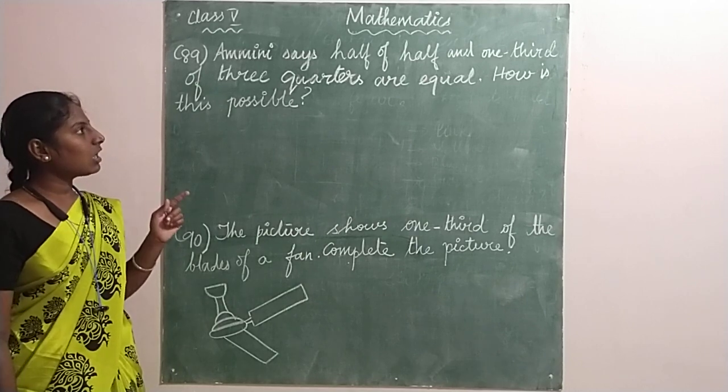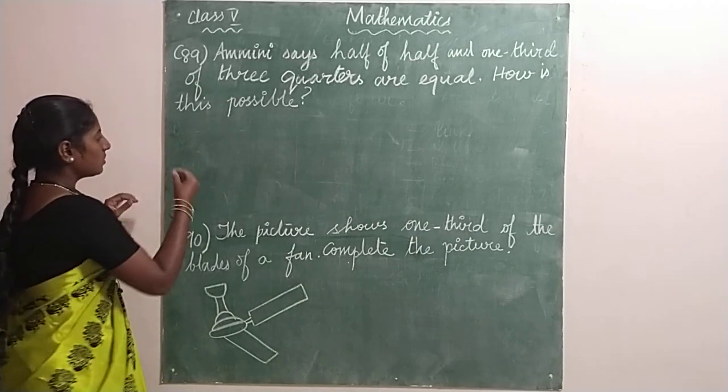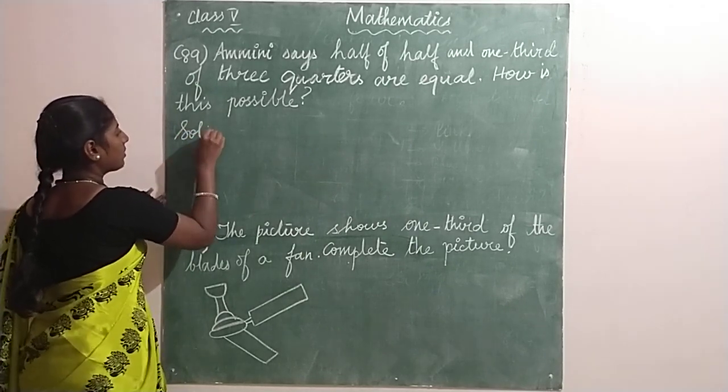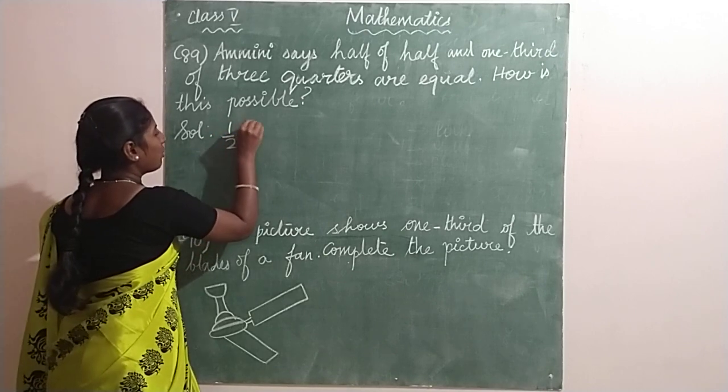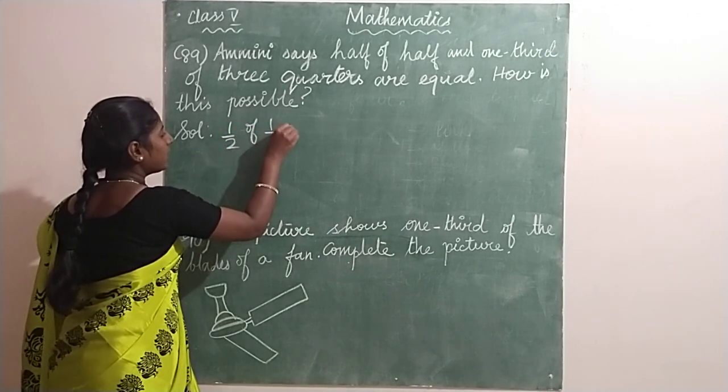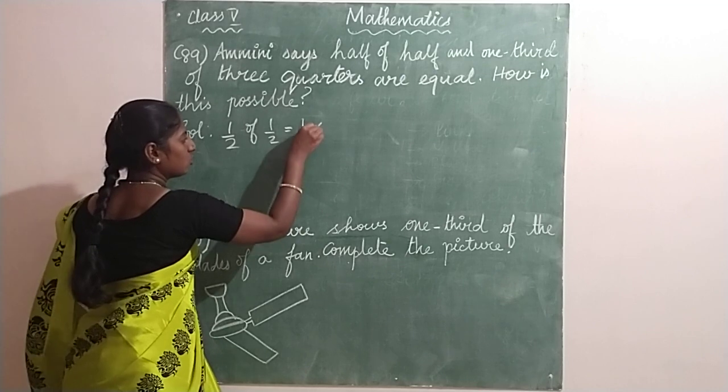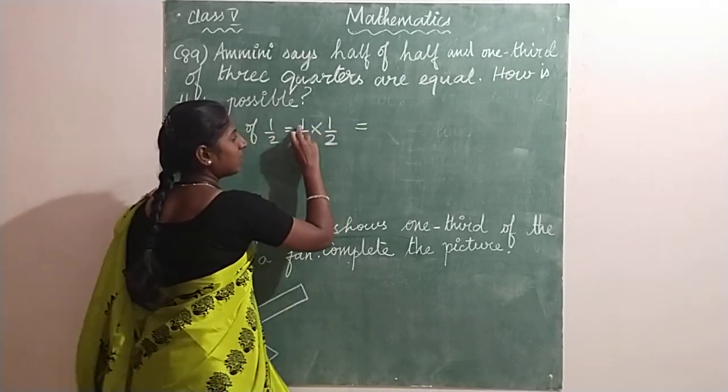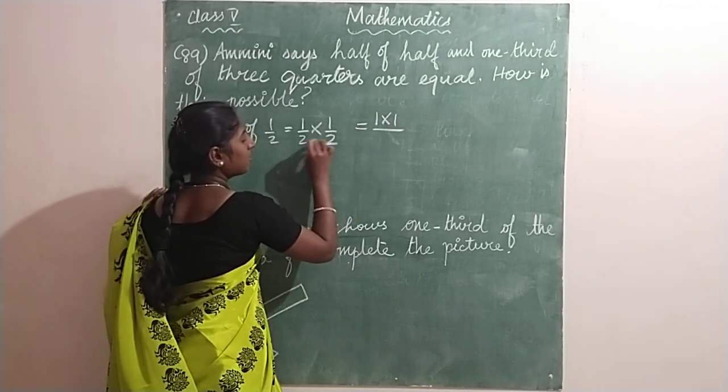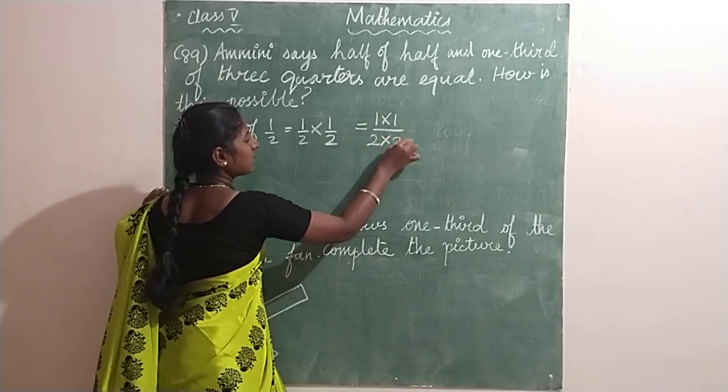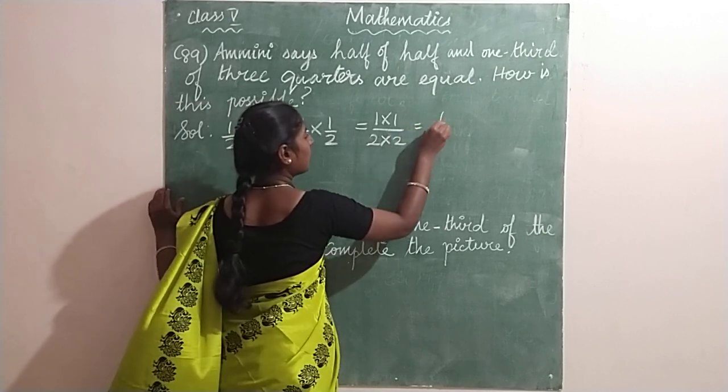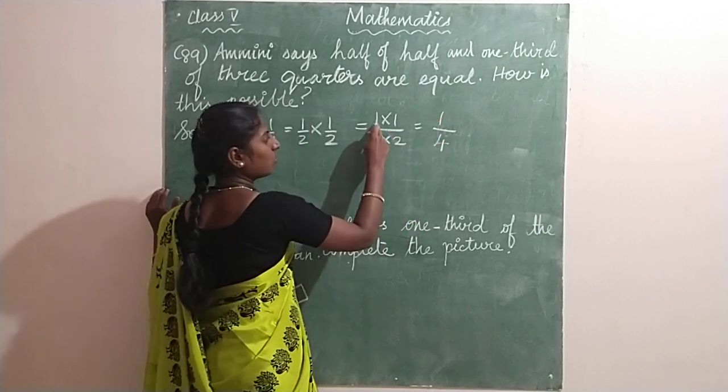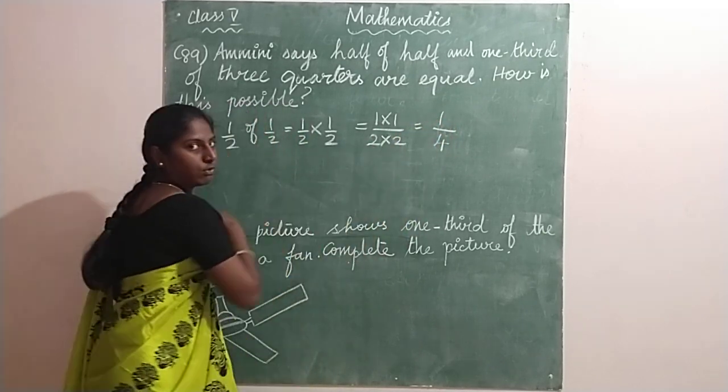So first we have to find what is half of half. The solution is half of half. Instead of half I can write one by two and one by two. Now multiply the numerators as it is divided by multiply the denominators as it is. So what is the answer? It is one by four. One ones are one and two twos are four.